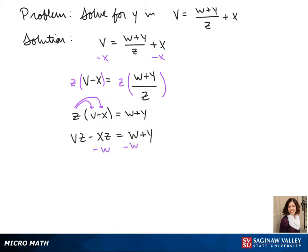Next, we subtract w from both sides, so y equals vz minus xz minus w.